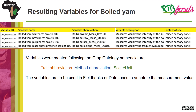The resulting variables for boiled yam look like this. The variables were created following the crop ontology nomenclature. From this nomenclature, a variable is composed of a trait, the method, and the scale — so trait abbreviation, method abbreviation, and scale unit were all brought together to come up with a variable, as we can see in the slide. These variables are to be used in field books and databases to annotate the measurement value.